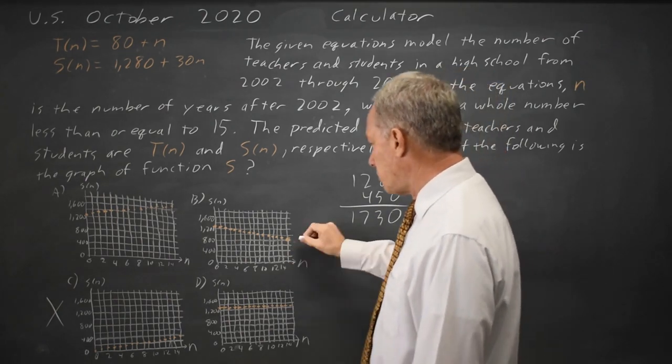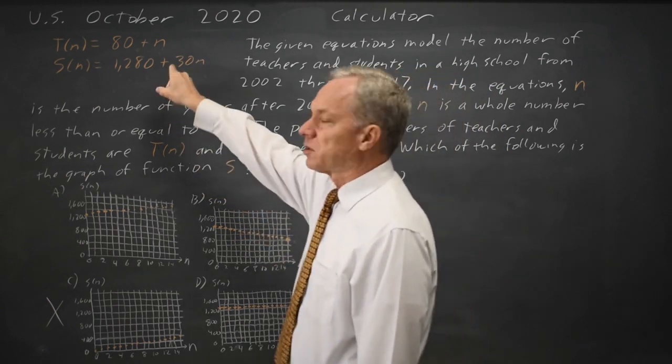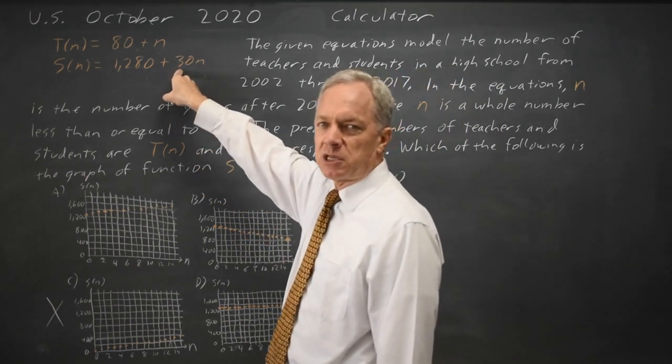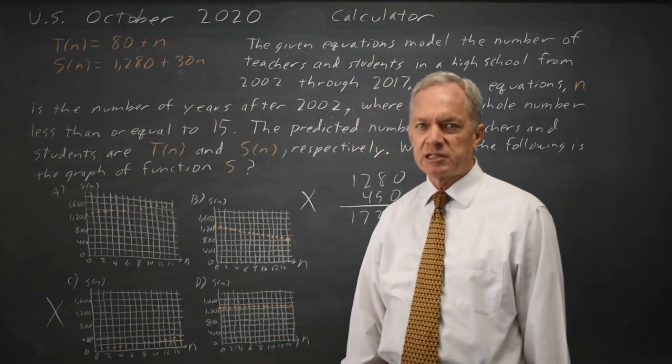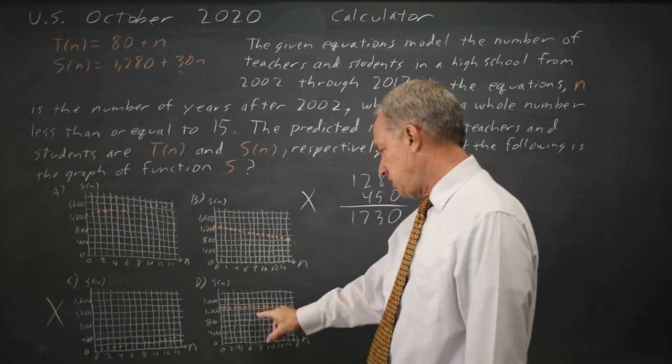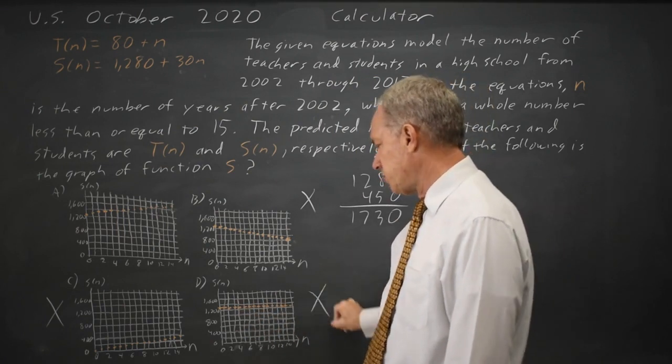Choice B is way too low. We've got a negative slope for B. The slope here is positive 30. The number should be increasing as n increases. Choice D looks like pretty close to 0 slope, so that's wrong.